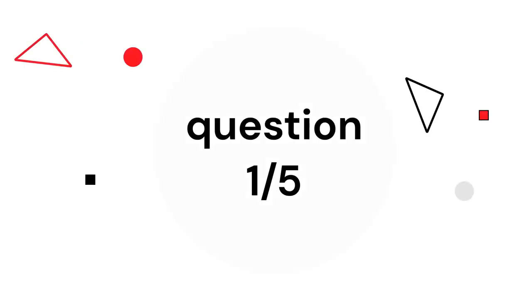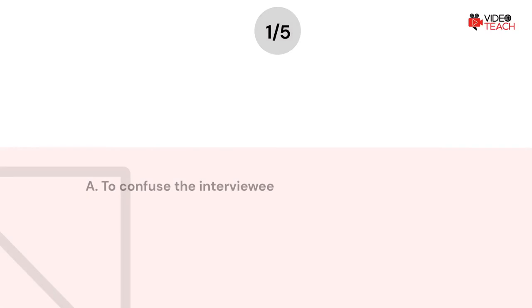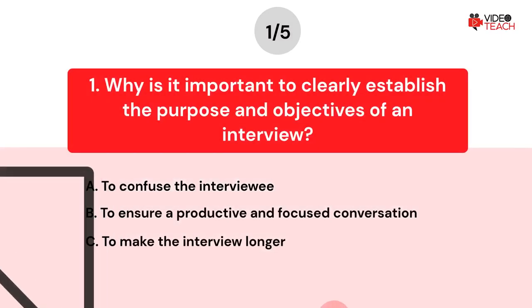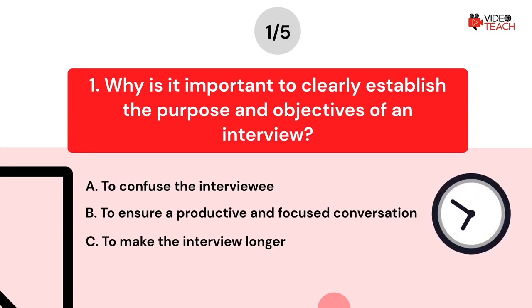Question number one. Why is it important to clearly establish the purpose and objectives of an interview? Option A: To confuse the interviewee. Option B: To ensure a productive and focused conversation. Option C: To make the interview longer. Now you have about 15 seconds to think about your answer.